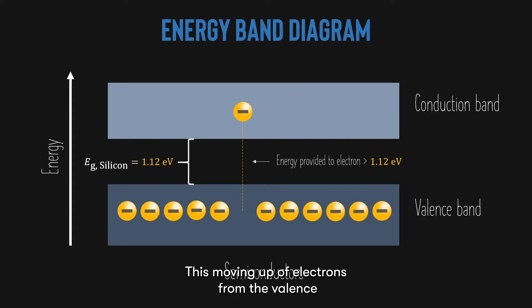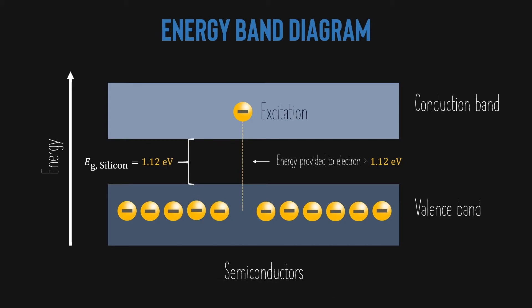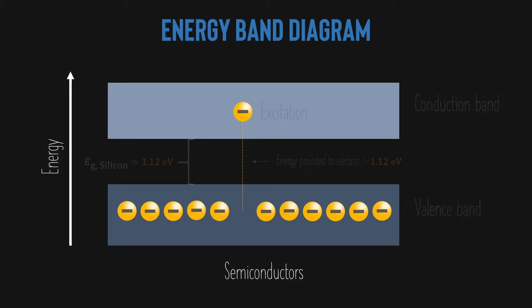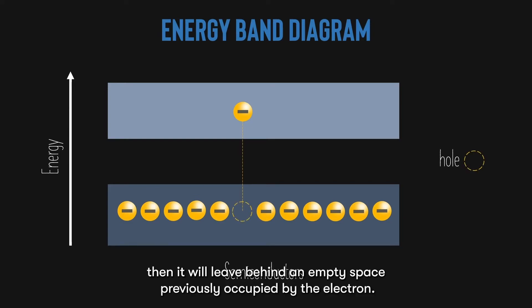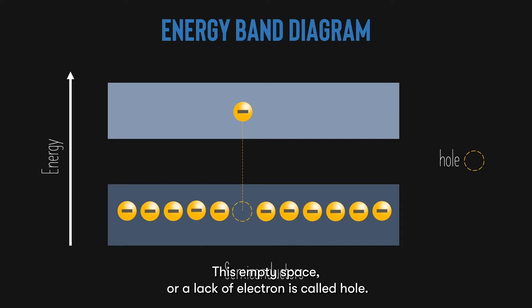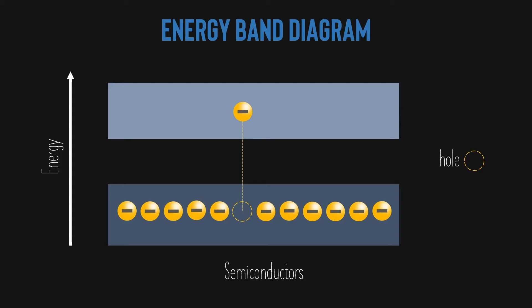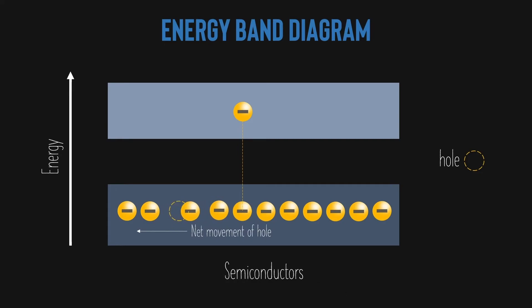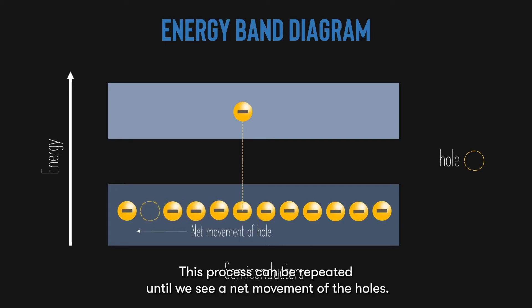This moving up of electrons from the valence band to the conduction band is called excitation. After excitation, the electron can now move freely in the conduction band to conduct electricity. Now, if one electron is excited, it will leave behind an empty space previously occupied by the electron. This empty space, or a lack of electron, is called a hole. If this empty space is occupied by the adjacent electron, a new empty space forms, forming another new hole. This process can be repeated until we see a net movement of the holes.